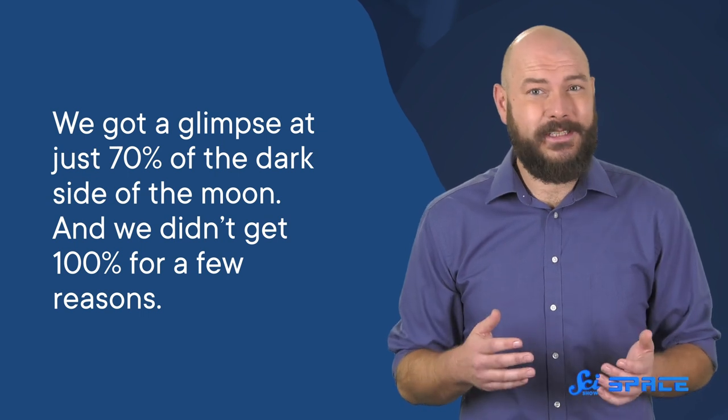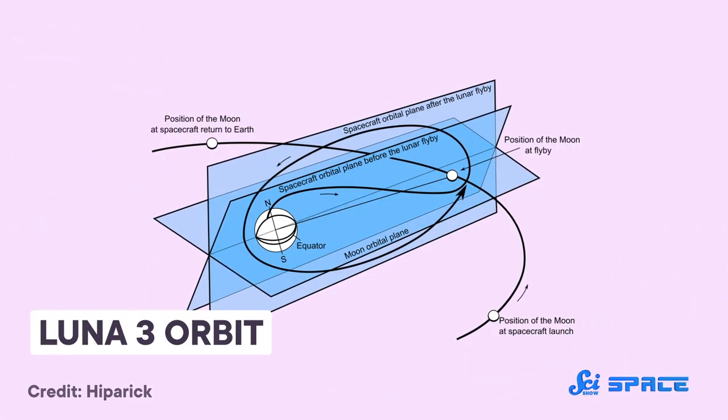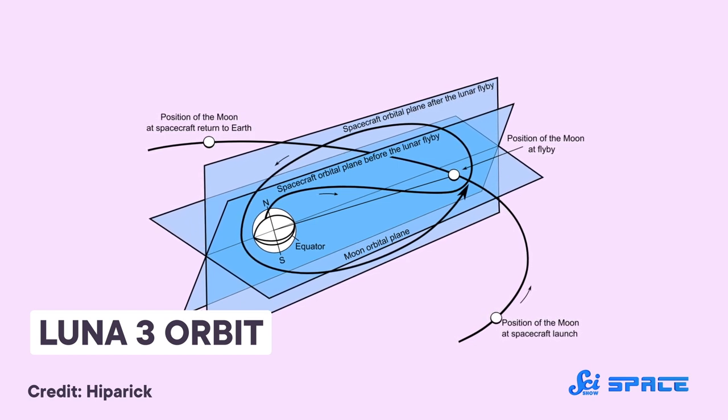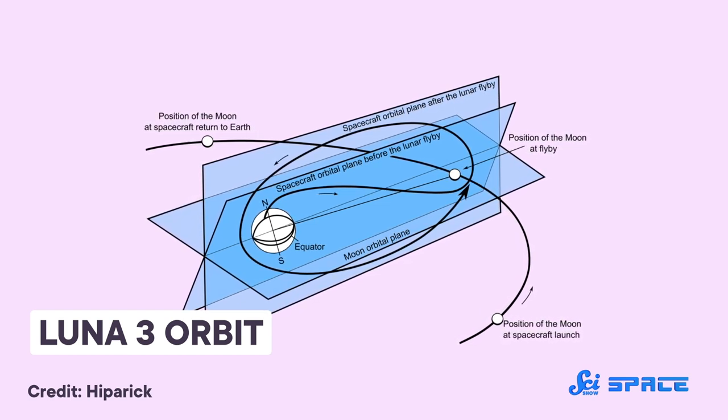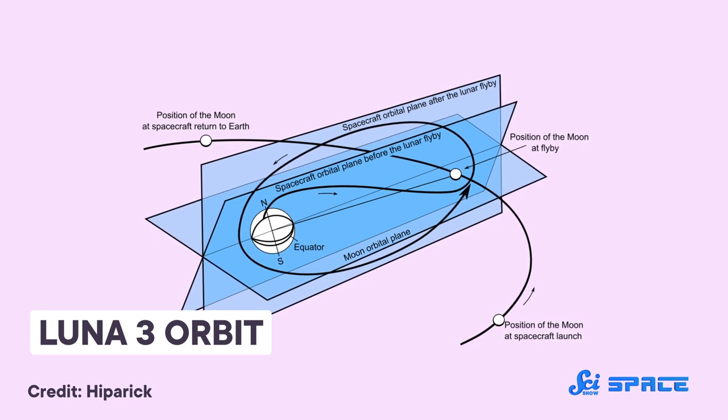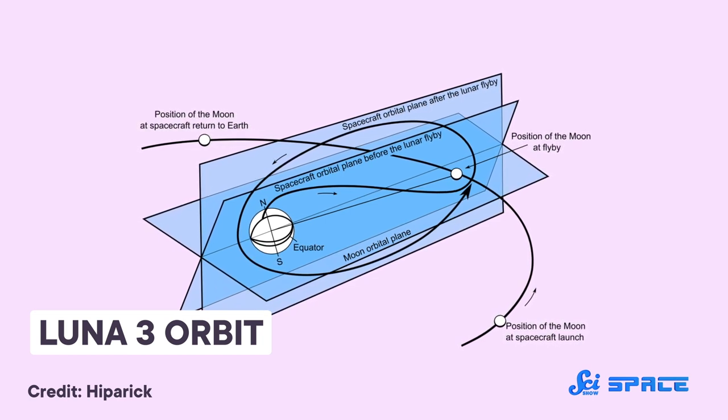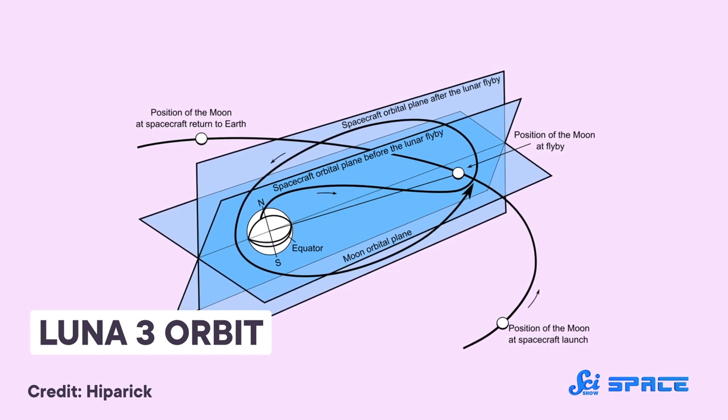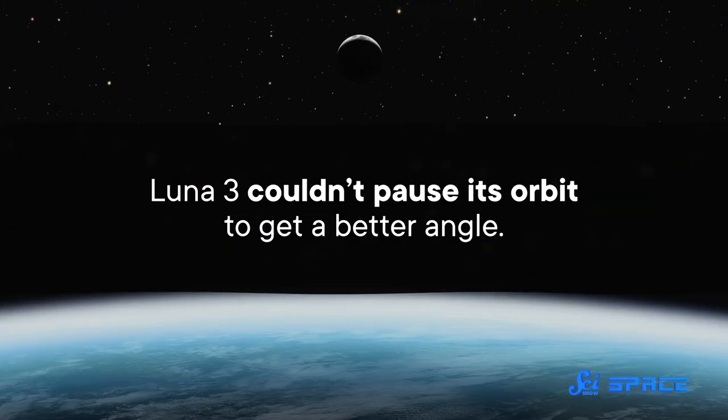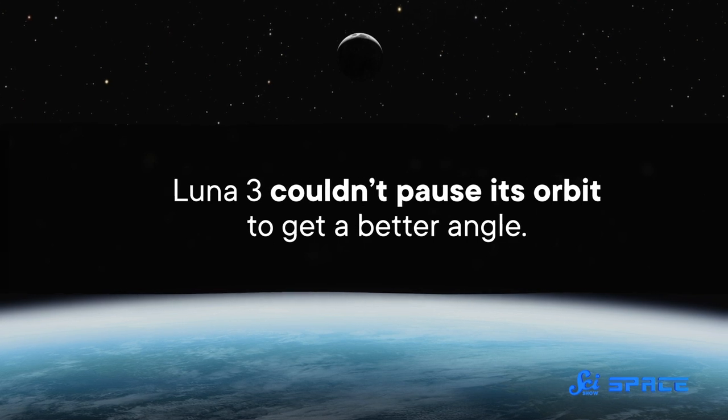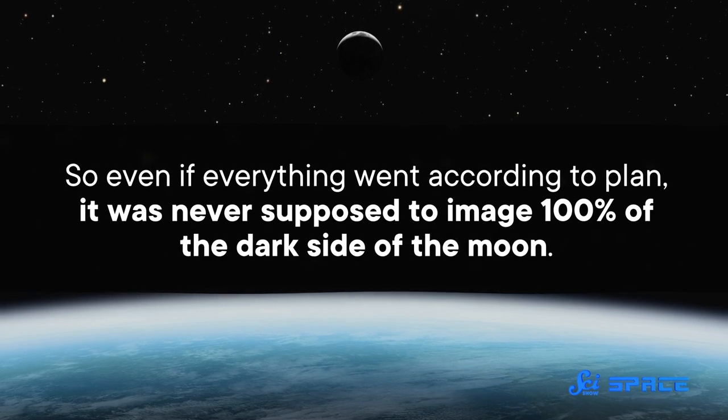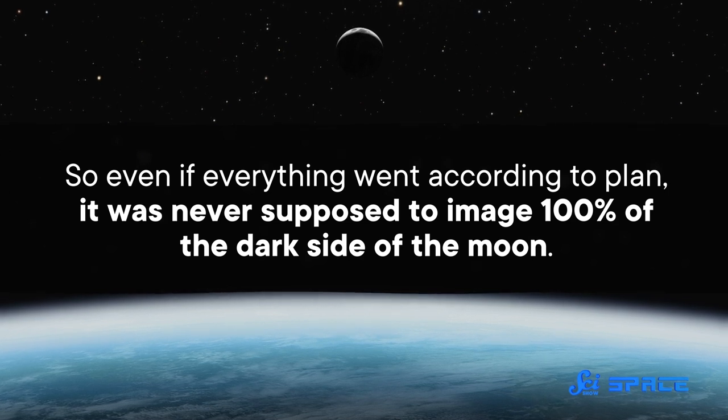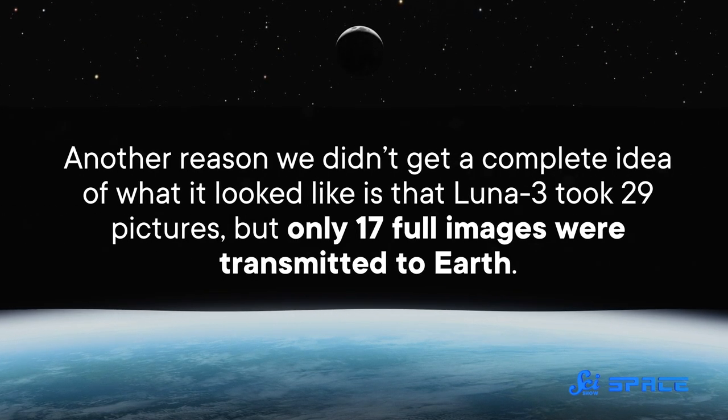And we didn't get 100% for a few reasons. First, Luna 3 was on a trajectory to orbit the Moon and take images while it traveled. It had photoelectric cells that used sunlight to align the probe to face the Moon. But there were no rockets on the spacecraft, so course correction was not an option. And it couldn't pause its orbit to get a better angle. So even if everything went according to plan, it was never supposed to image 100% of the dark side of the Moon.